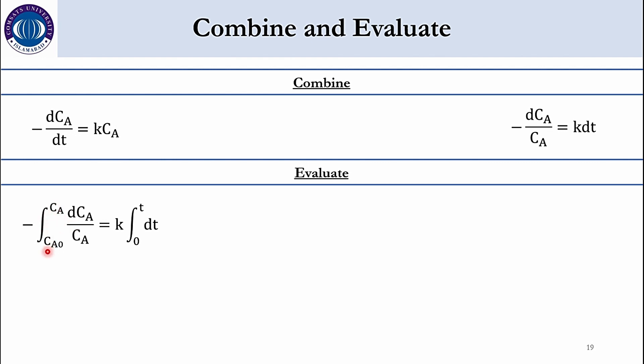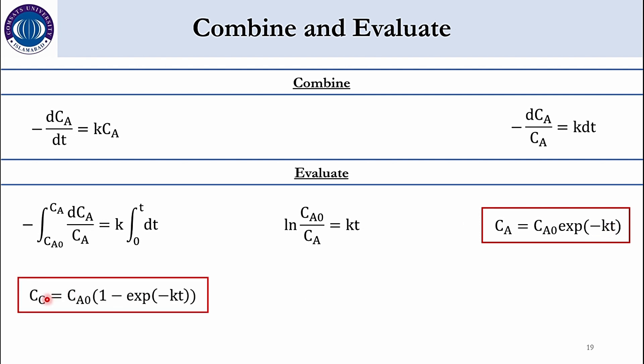First we will integrate it from CA0 to CA and 0 to t. Accordingly that expression becomes as ln CA0 over CA is equal to k into t. Then if you rearrange it. It will become CA is equal to CA0 exponential of minus k into t. Or if you remember in the previous slide we have seen CC is equal to CA0 minus CA. So once we put the value of CA over here it will be CC equals CA0 into 1 minus exponential of minus k of t. Or accordingly we can say natural log of CA0 minus CC over CA0 is equal to minus k of t.